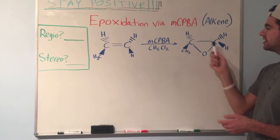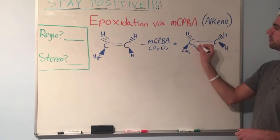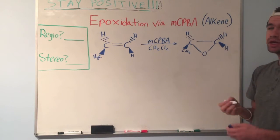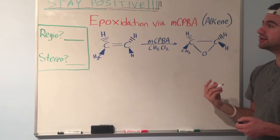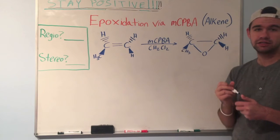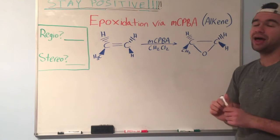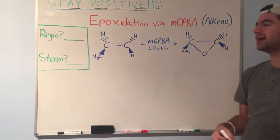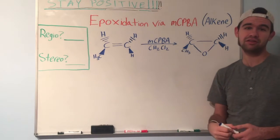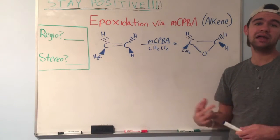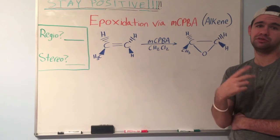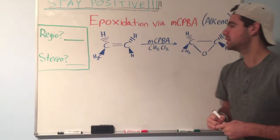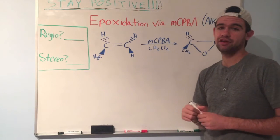Remember an epoxide is a cyclic ether, so we have two carbons forming a closed ring with an oxygen. So let's talk about the mechanism. To understand the mechanism, you have to memorize, unfortunately, the structure of MCPBA, which could be a little daunting, but I highly recommend just redrawing the structure two or three times, and you should have it down pretty quickly. So let's dive in.